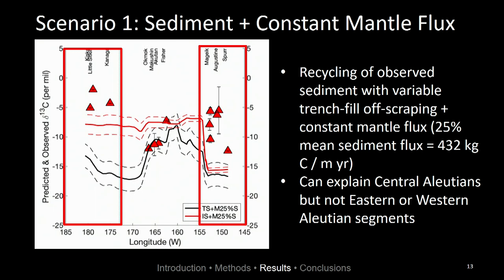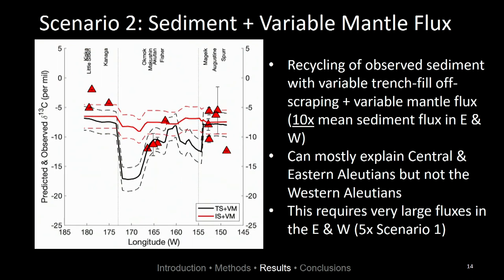The next scenario we considered was, again, recycling of the sediments with variable trench fill off-scraping, but here we considered a variable mantle flux. We calculated what mantle flux would be required to get a fit in the eastern and western segments where we have heavier carbon isotopes. In doing this, we find it requires a mantle flux 10 times the mean sediment flux, which is quite high. We're not sure this is realistic, but in doing this we do get a good fit to our observations.